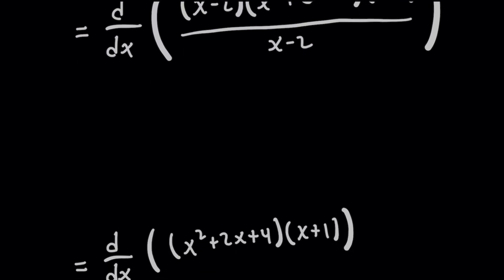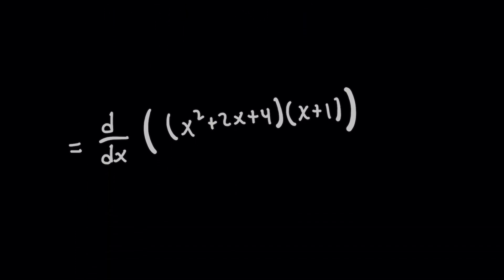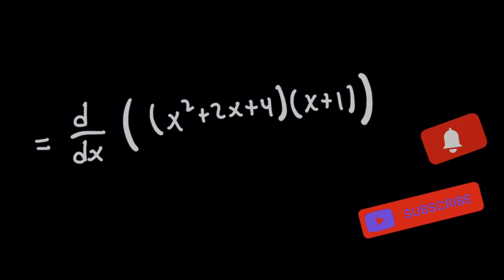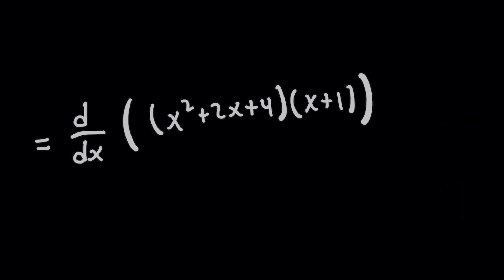But I'm going to go ahead and cancel them now because now instead of using the quotient rule, there's no fraction, right? We'll just use the product rule where you take the derivative of this left expression times the right plus the derivative now of the right times the left.